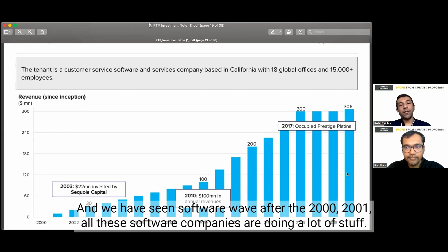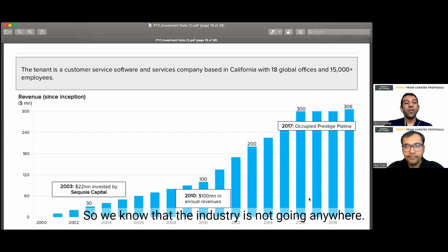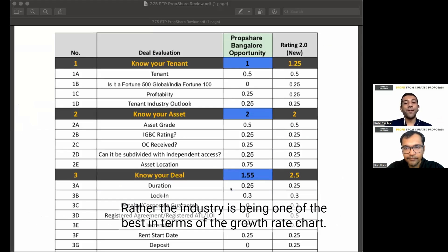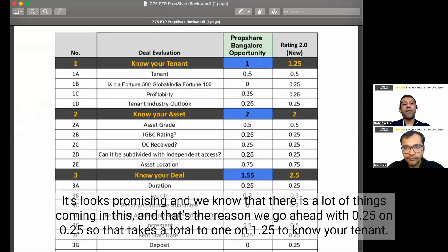And this speaks about the trend in the industry as well. We have seen the software wave after 2000, 2001. All the software companies have done a lot of stuff. So we know that the industry is not going anywhere. Rather, the industry is being one of the best in terms of the growth rate chart. It looks promising. And that's the reason we go ahead with 0.25 on 0.25. So that takes a total to 1 on 1.25 to know your tenant.